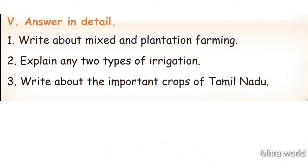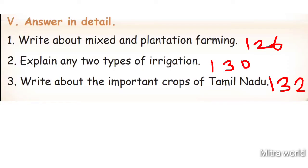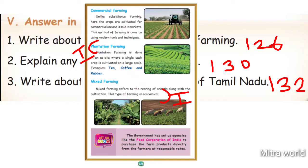Answer in detail. Question 1: Write about mixed and plantation farming. Take page number 126. Plantation farming is done in an estate where a single cash crop is cultivated on a large scale. Examples: tea, coffee and rubber. Mixed farming refers to the rearing of animals along with the cultivation. This type of farming is economical.